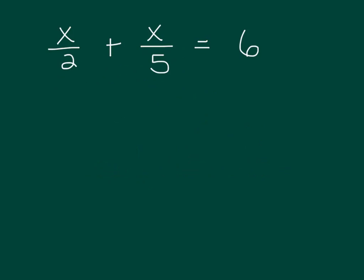So if you're looking at it right now, it kind of is really messy because it has fractions in it. I really don't like equations that have fractions like the 2 and the 5 here. So our goal is we want to try to get rid of them. One way we figured out to do that last year is by multiplying everything by something that all the denominators go into.